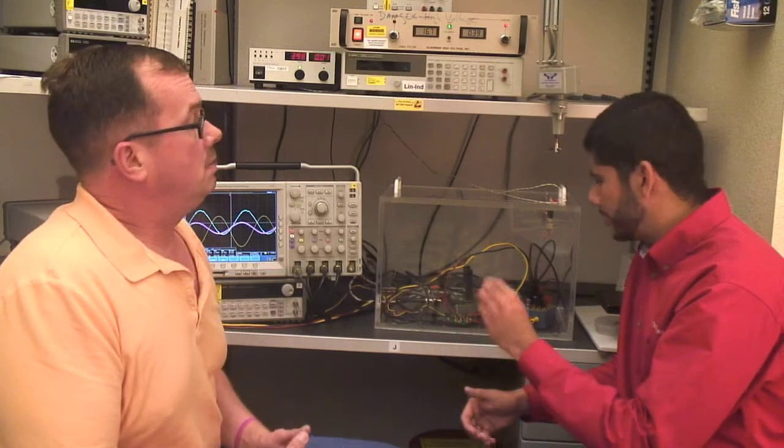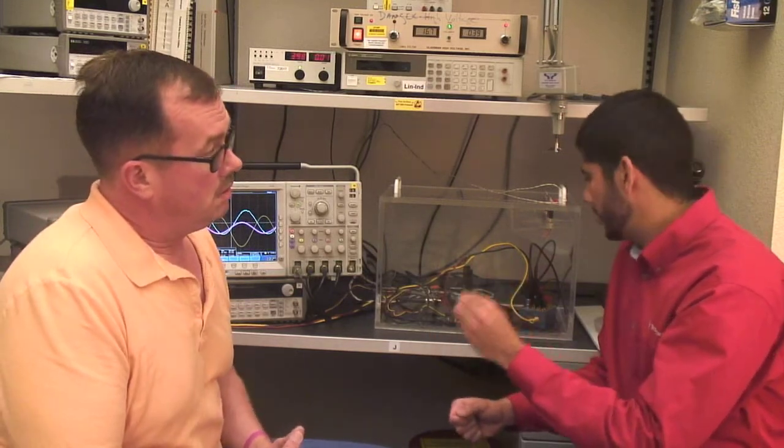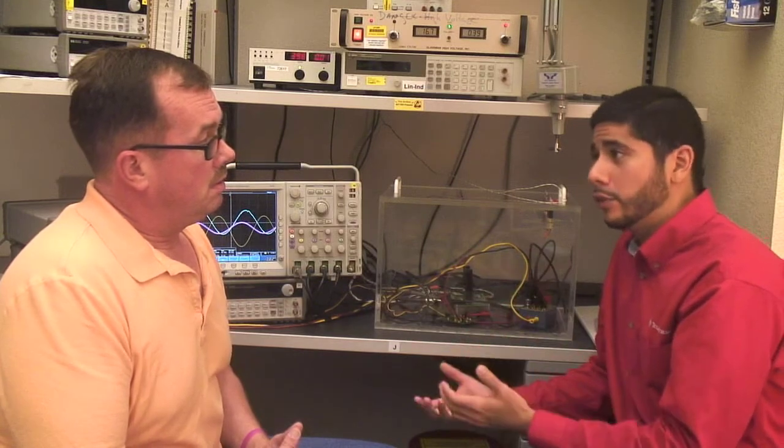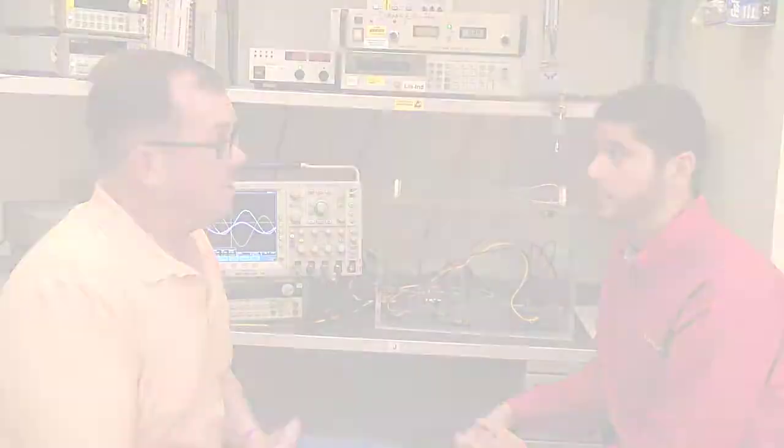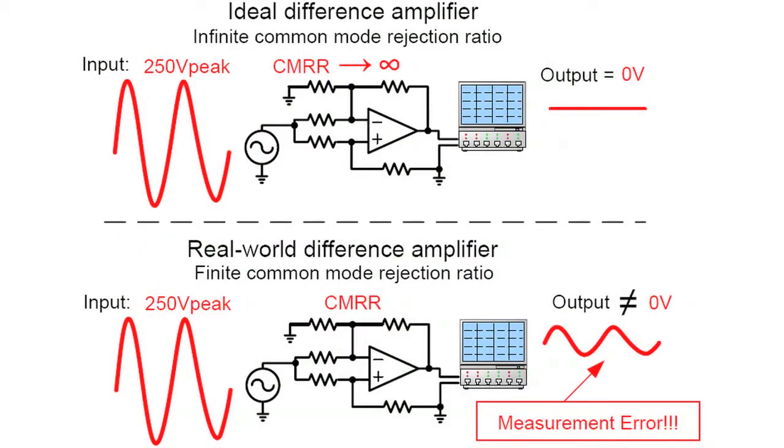And in this circuit, we tie the two inputs together. So they're zero volts differential. So in that case, if you're applying zero volts differential, you would ideally expect the output to be zero. Exactly. In an ideal difference amplifier, common mode rejection ratio is infinite. We would expect zero volts on the output when both of the inputs are sorted together.